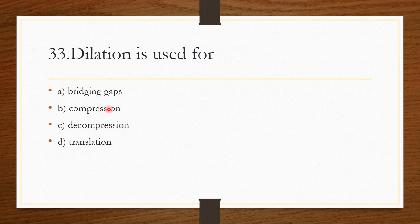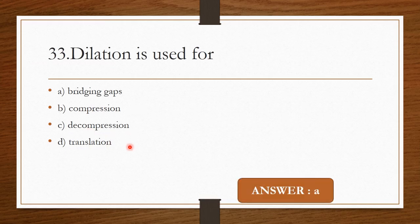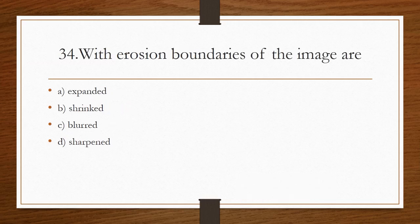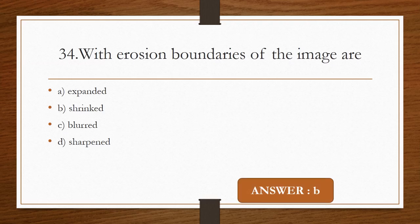Question 32: Dilation is used for — bridging gaps, compression, decompression, or translation. Dilation is used for bridging gaps. Option A is correct. Question 33: With erosion, boundaries of the image are — expanded, shrinked, blurred, or sharpened. The correct answer is Option B — shrinked.